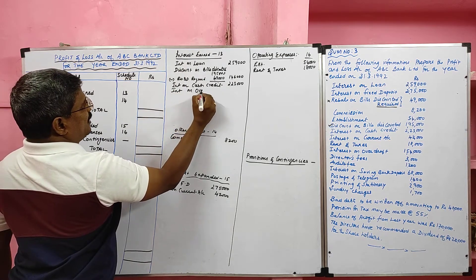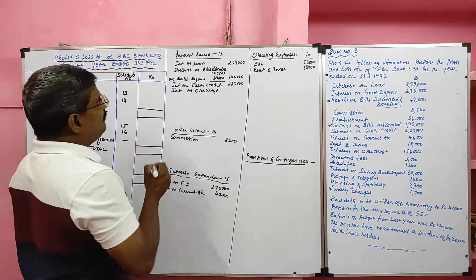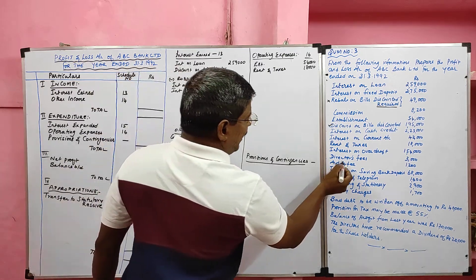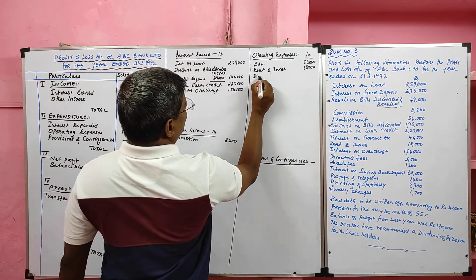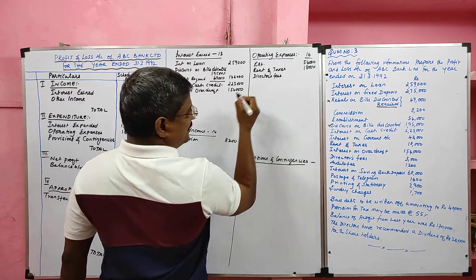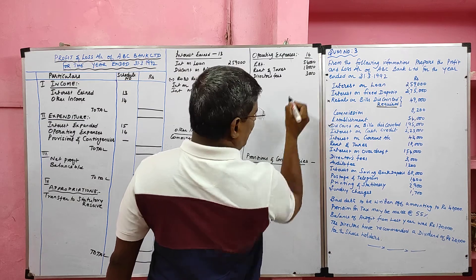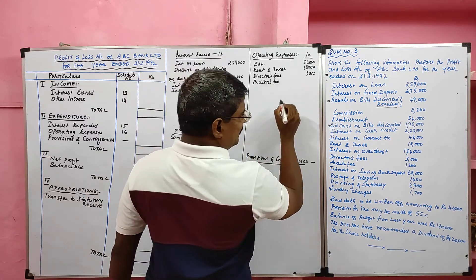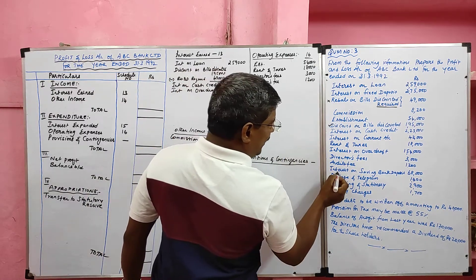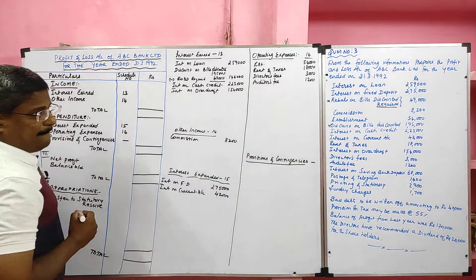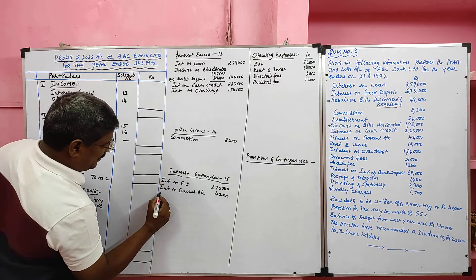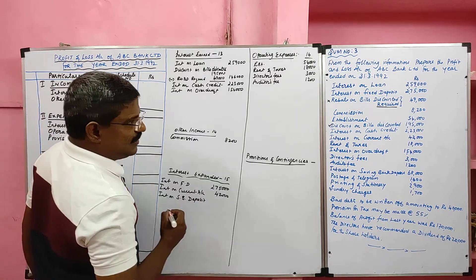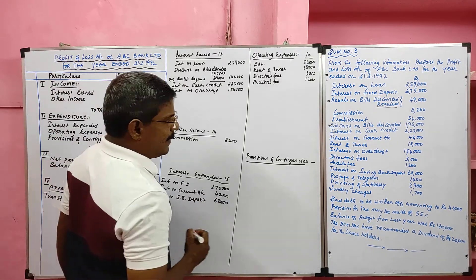Interest on overdraft is included in interest earned because it is a receipt of interest, value rupees 1,54,000. Director fees is an operating expense with a value of rupees 3,000. Auditor fees is also an operating expense with a value of rupees 1,200. Interest on saving bank deposit is a payment, so it is included in interest expended at rupees 68,000.